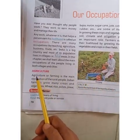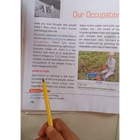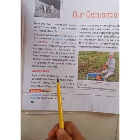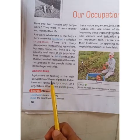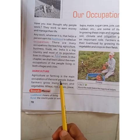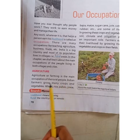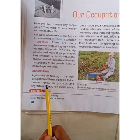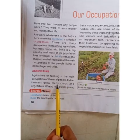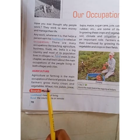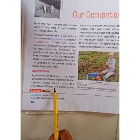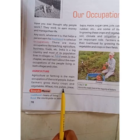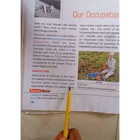Agriculture or farming is the main occupation of the rural people. Indian farmers grow many crops and vegetables — wheat, rice, pulses, and jowar.